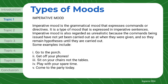Imperative mood is the grammatical mood that expresses commands or directives. It is a type of mood expressed in imperative sentences. Imperative mood is also regarded as unrealistic because the commands being issued have not yet been carried out when they were given, and so they remain hypotheses until they are carried out. Some examples include: 'Go to the porch,' 'Get off your phones,' 'Sit on your chairs, not the tables,' 'Play with your spare time.'